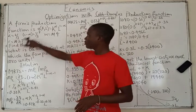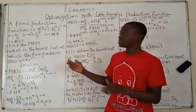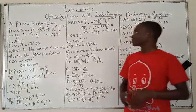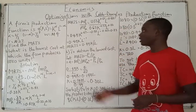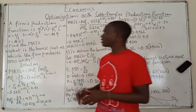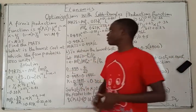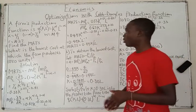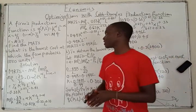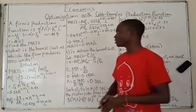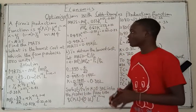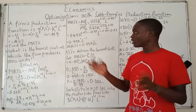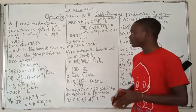Since 2/3 plus 1/3 equals 1, this is a constant return to scale Cobb-Douglas production function. The question says: find the marginal rate of technical substitution (MRTS), and what is the lowest cost at which the firm produces 1,080 units? A very interesting question.